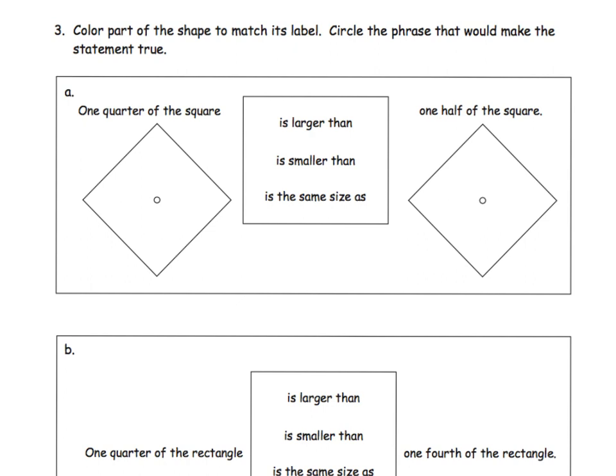And the reason we did that previous slide is to lead us into this slide, which is now we're going to be introducing the concept of comparison. So it says one quarter, so color part of the shape to match its label. So it says color in a quarter, color in a half. And then circle the phrase that would make the statement true. I love the fact that they're taking this square, they put it on its point to make it kind of look like a diamond. And our students might want to say, diamond, that's a diamond, it's not a square. But of course, parents and teachers, please help your kids understand that this is indeed still a square. It's kind of this bonus teaching in addition to the fractions that we're learning.